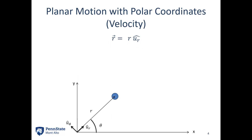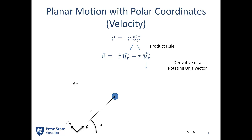To find velocity we take the derivative of position over time. The derivative of position r·ur requires the product rule because both r is changing — that distance can change over time — and also ur is going to be moving as the particle moves through space. So we get r-dot times ur plus r times ur-dot. The derivative of the rotating unit vector ur-dot equals theta-dot in the u-theta direction. So velocity is r-dot in the ur direction plus r·theta-dot in the u-theta direction.